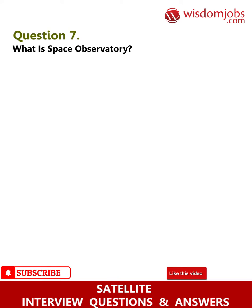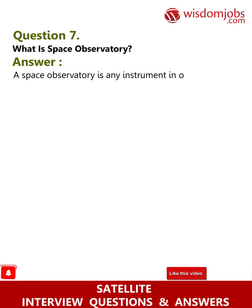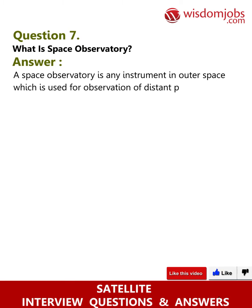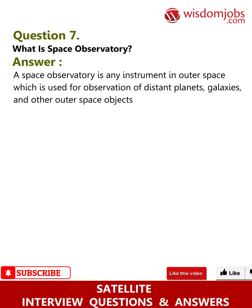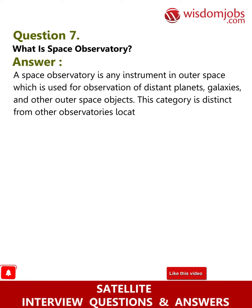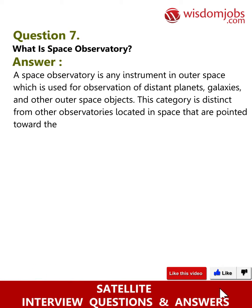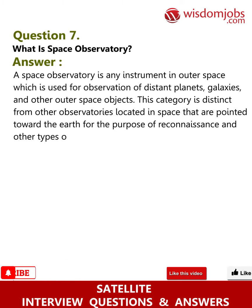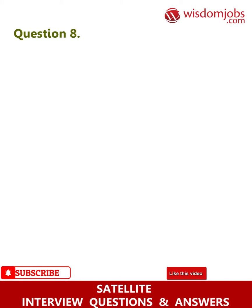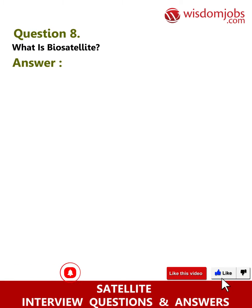Question 7: What is a space observatory? Answer: A space observatory is any instrument in outer space which is used for observation of distant planets, galaxies, and other outer space objects. This category is distinct from other observatories located in space that are pointed toward the Earth for the purpose of reconnaissance and other types of information gathering.